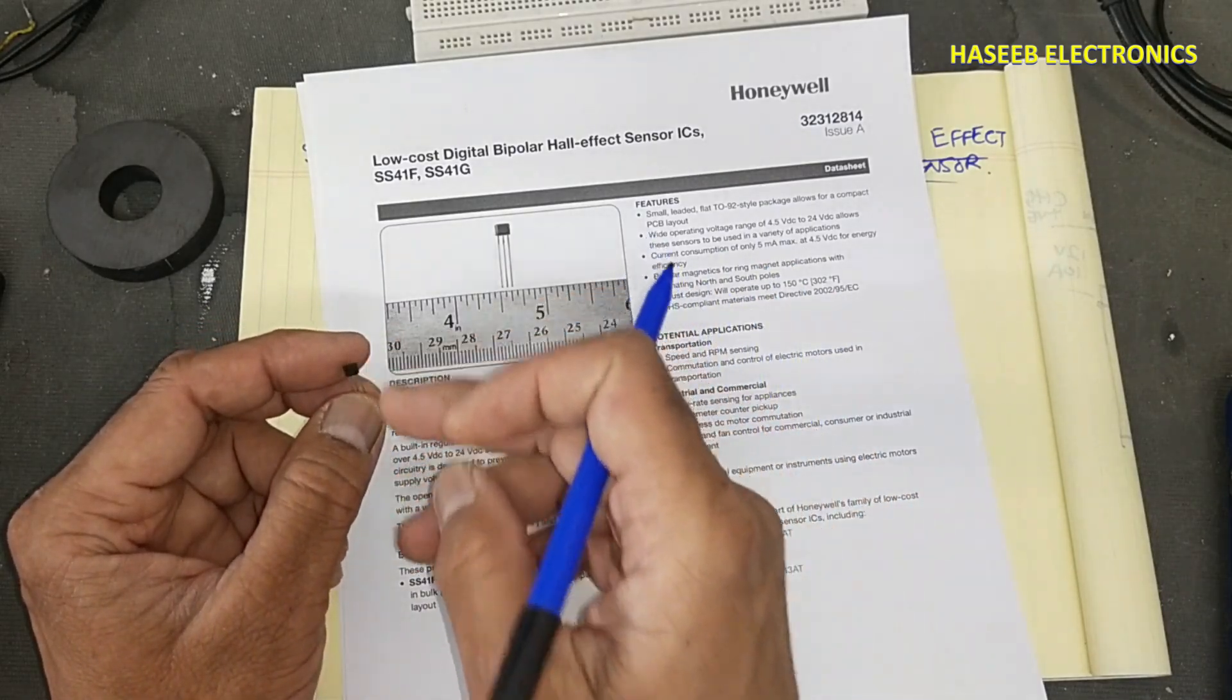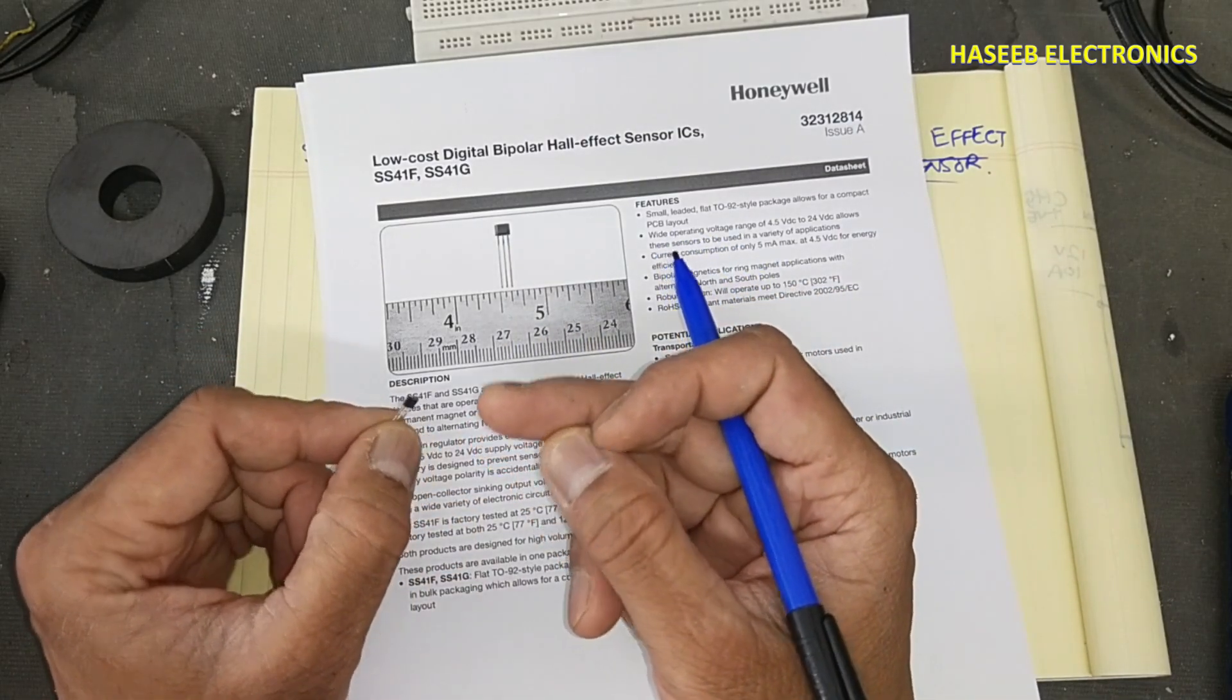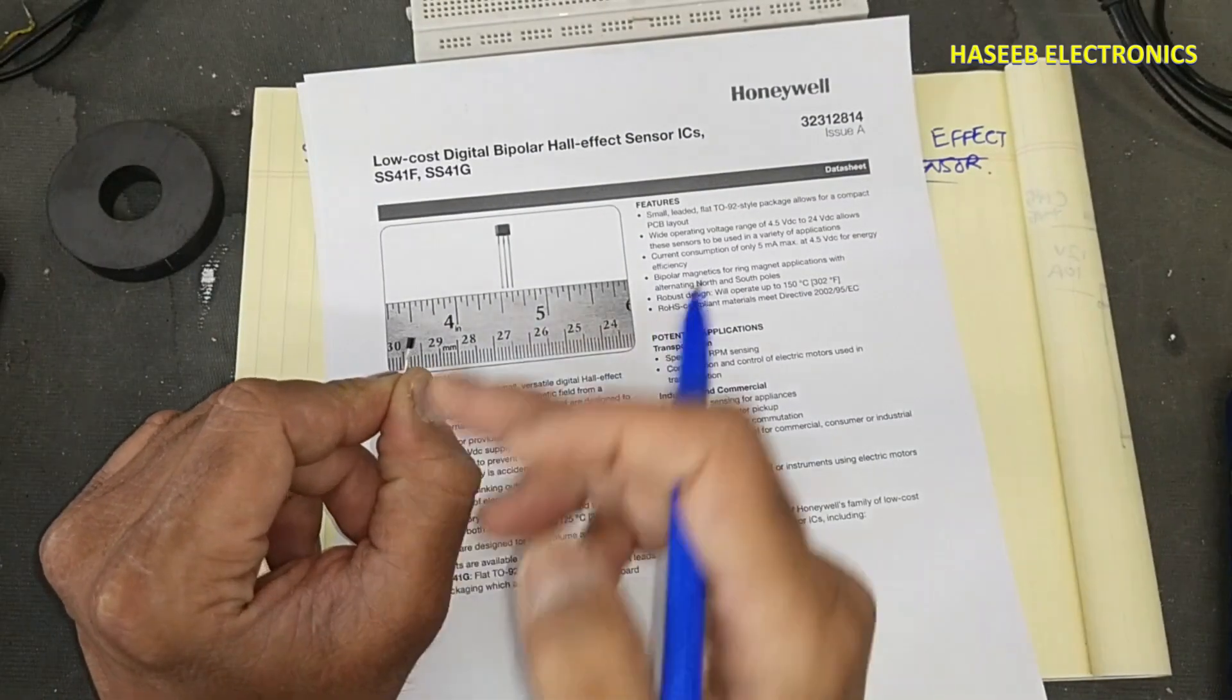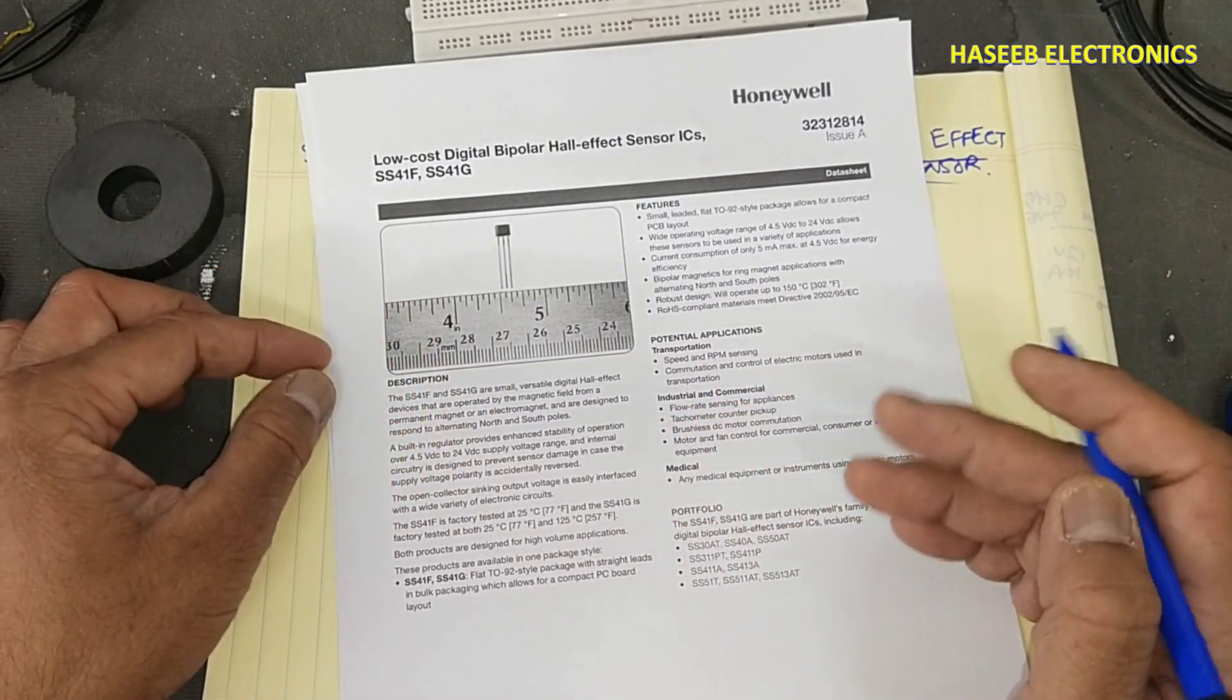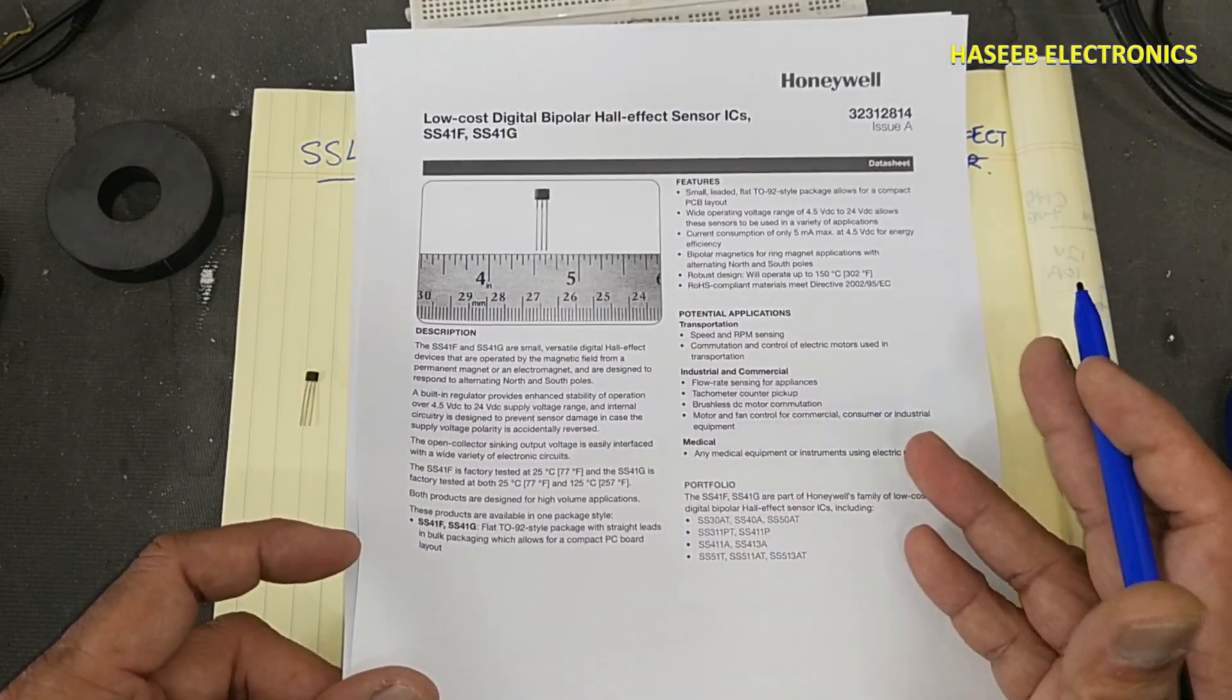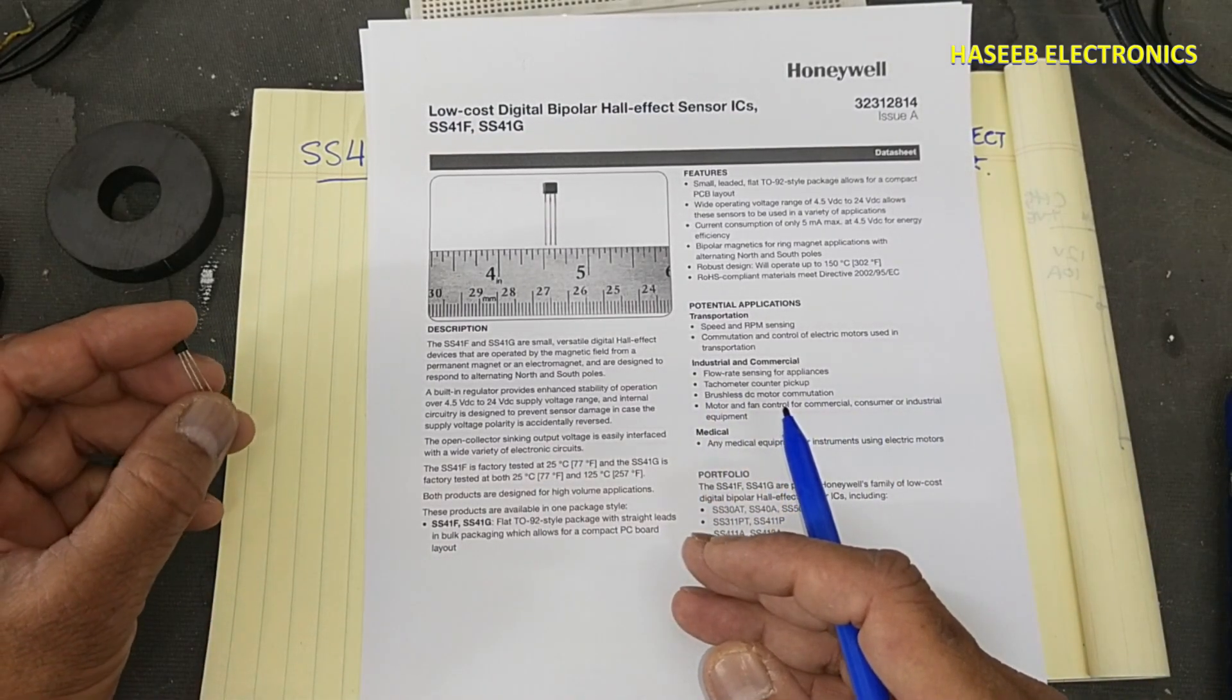At the motor, sometimes it is used for RPM counting. A magnet is installed in the rotating shaft and the sensor is placed near that magnet, providing a digital output signal that can be interfaced with any electronic circuit. Applications include brushless DC motor commutation, BL DC motors, tachometers, pickups, and flow rate sensing.